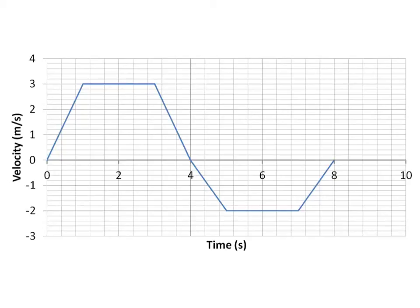So let's break down this question. First of all, what we've got is a velocity-time graph. There are a couple of things to note before we even get started. The area under the graph is your displacement, and the gradient of your graph is going to be the acceleration, because that's the rate of change of the velocity.